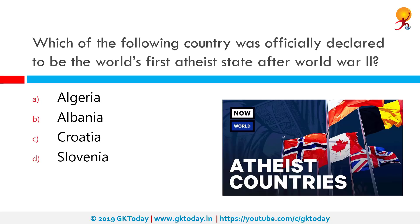Which country was officially declared to be the world's first atheist state after World War II? This was Albania. Albania, under Enver Hoxha, became in 1967 the first — and to date the only — formally declared atheist state, going far beyond what most other countries have attempted, completely preventing religious observance and systematically repressing and persecuting adherents.